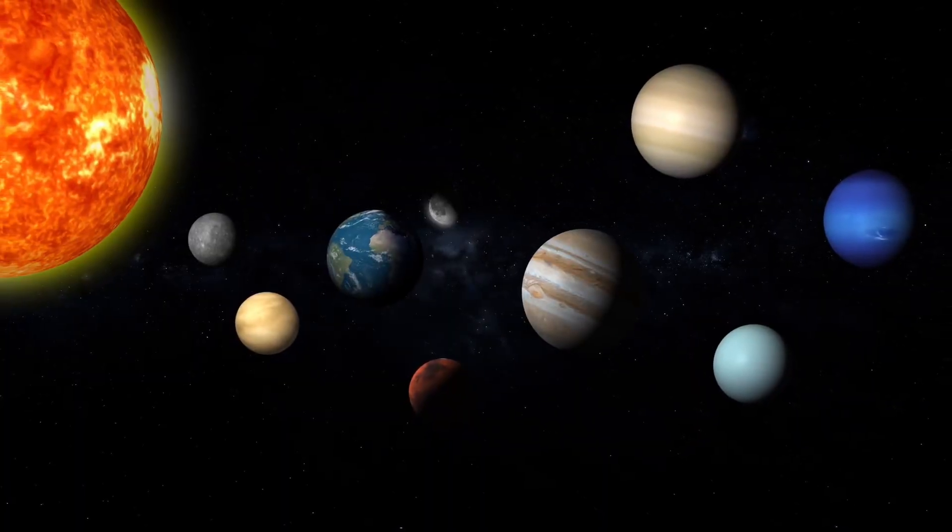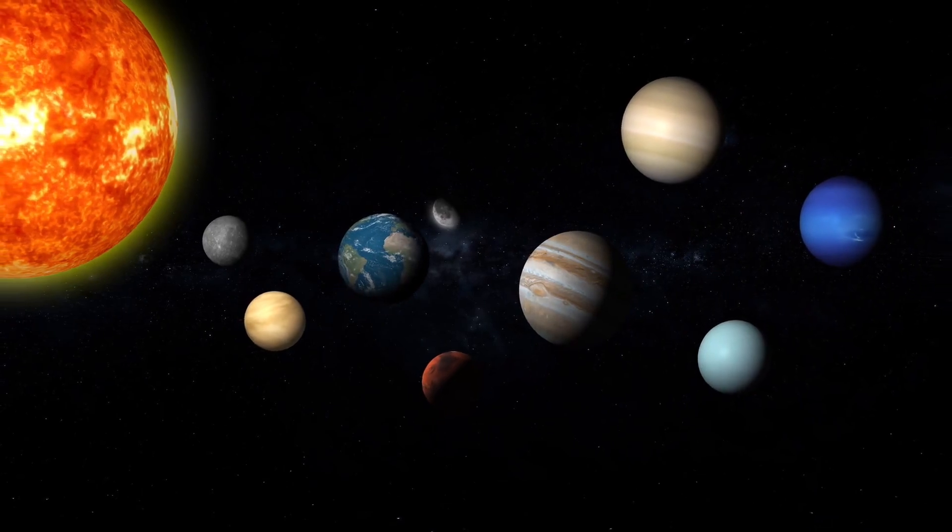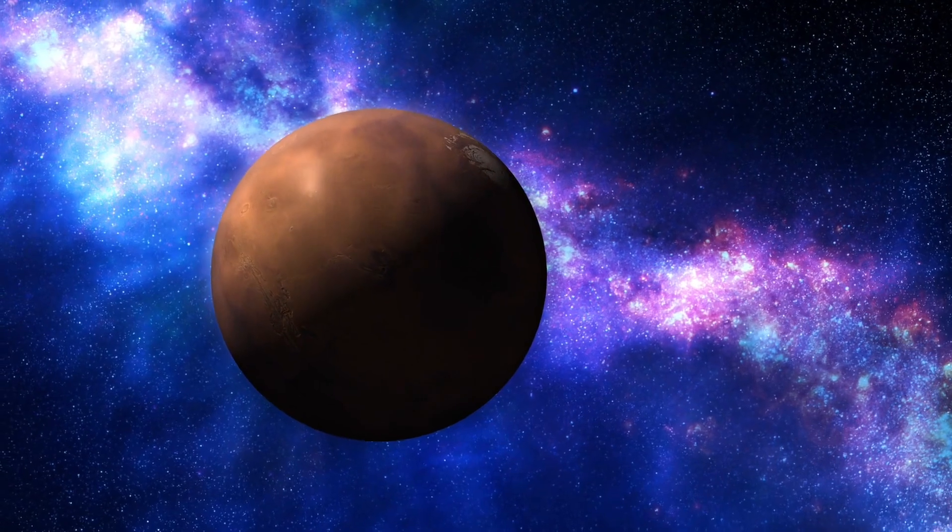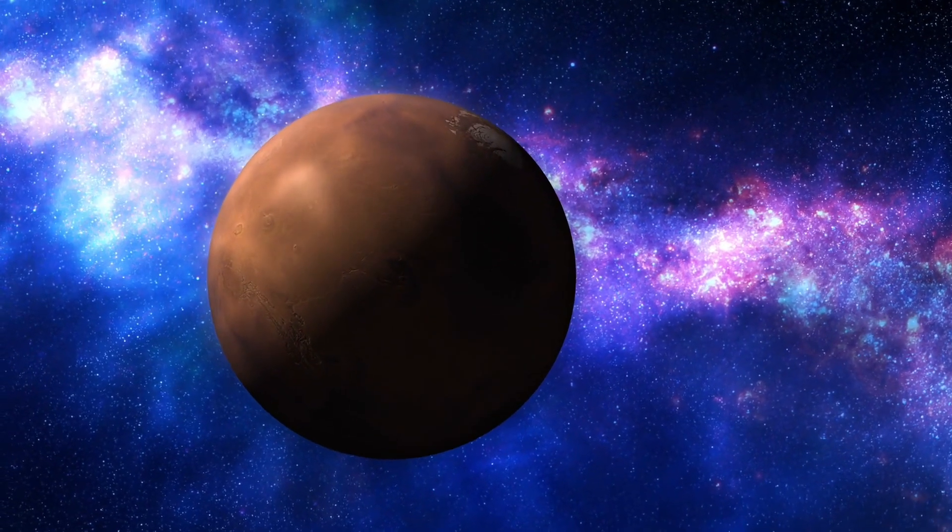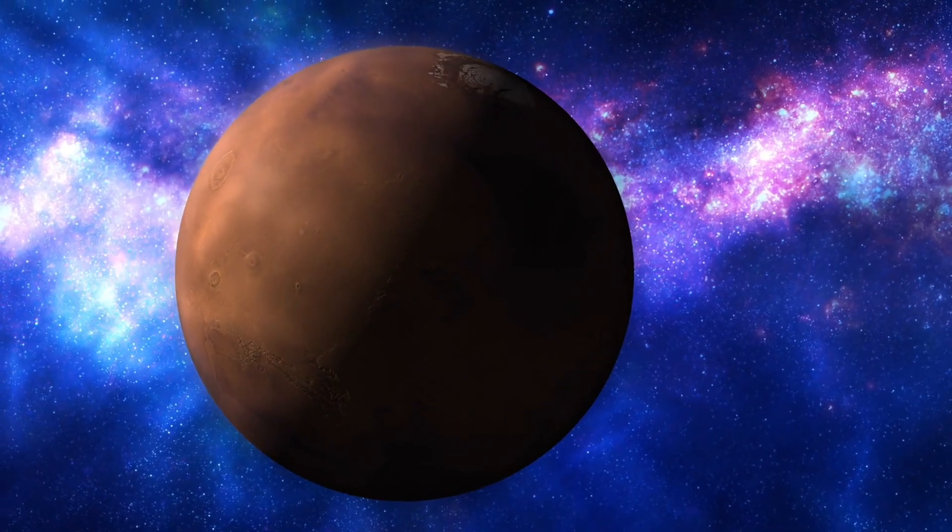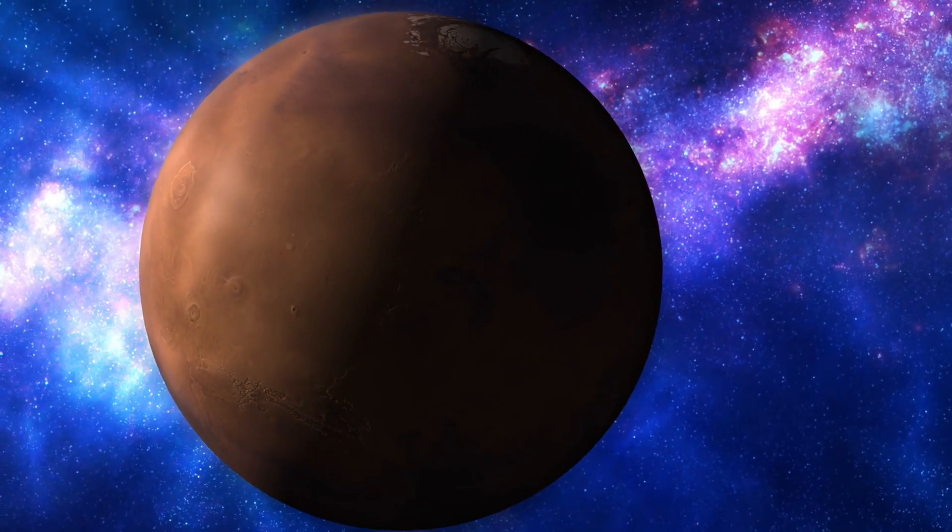An electrical current in the metallic hydrogen layers gives rise to Saturn's planetary magnetic field, which is weaker than Earth's but has a magnetic moment 580 times that of Earth because of Saturn's greater size.